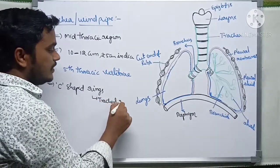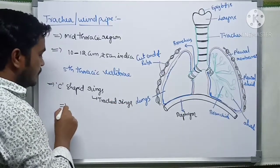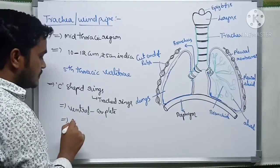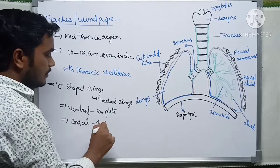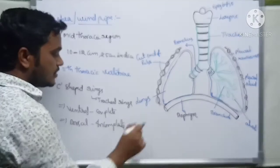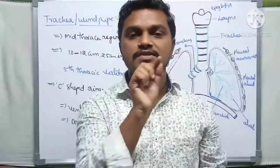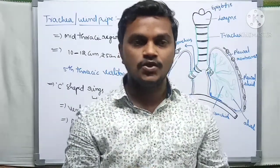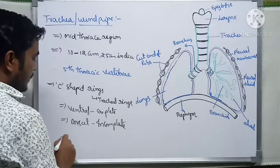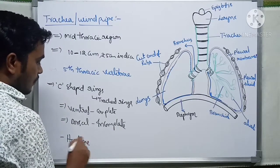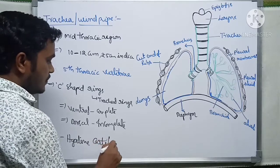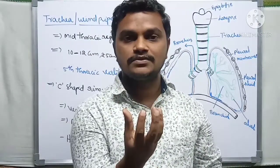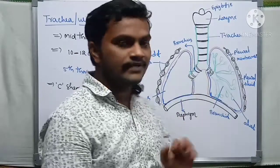The tracheal rings are ventrally complete but dorsally incomplete, because the dorsal region is adjacent to the vertebral column. The C-shaped support keeps the tracheal pipe open. These rings are made up of hyaline cartilage, which prevents the trachea from collapsing.